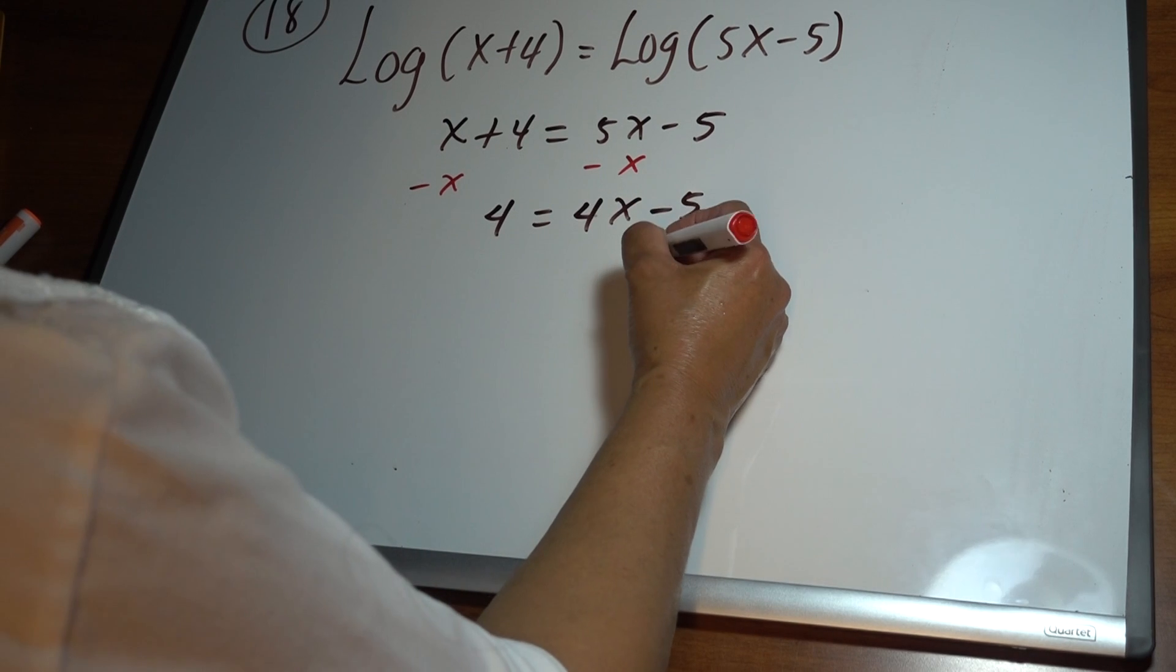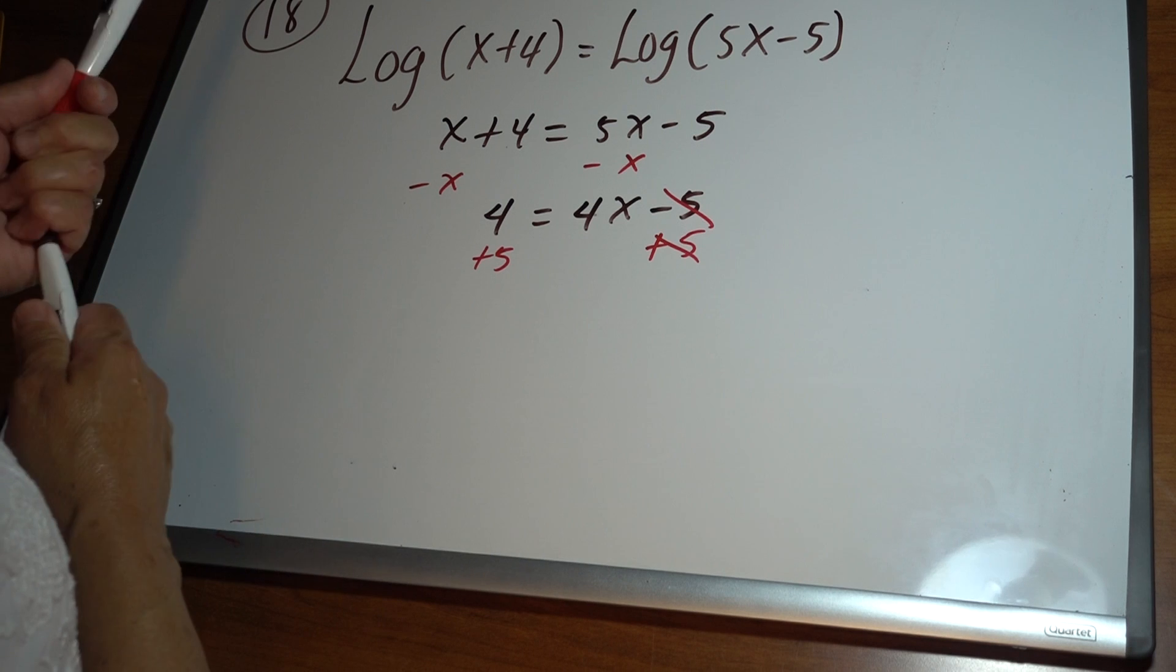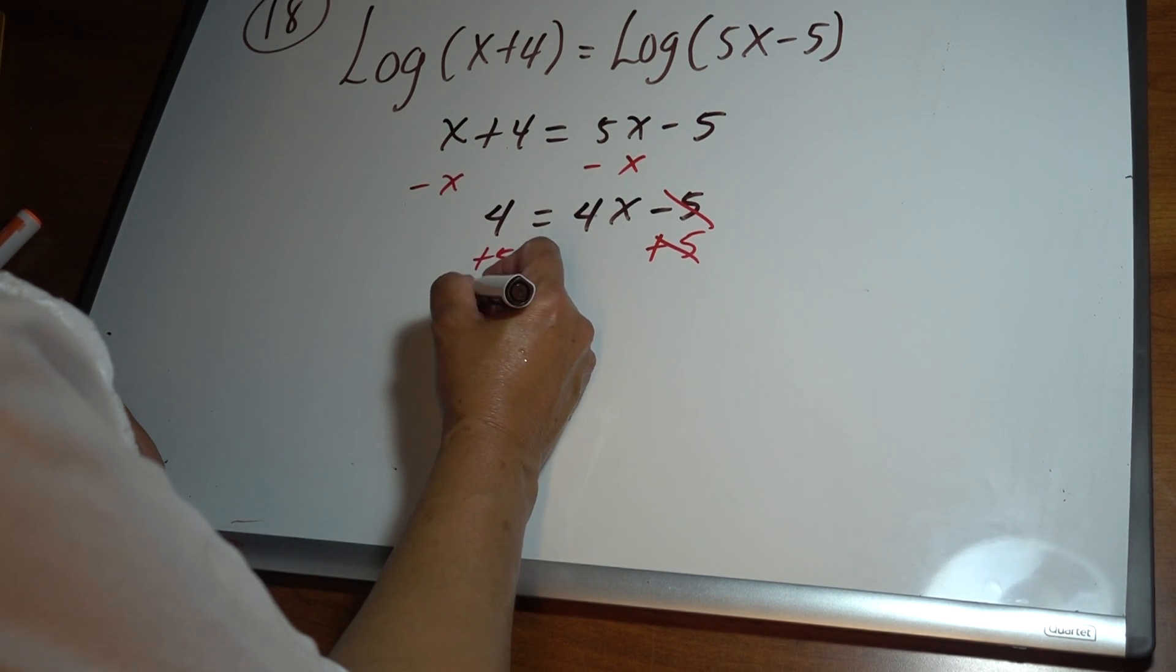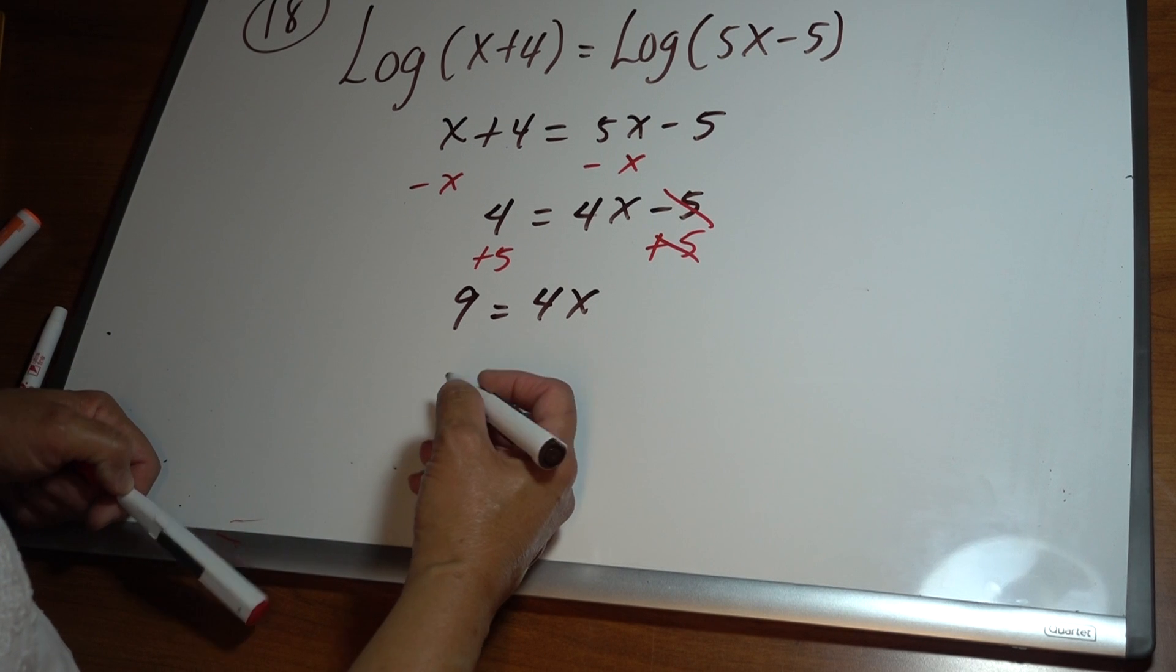Adding 5 to both sides, we have 9 equals 4x. From here, divide by 4.